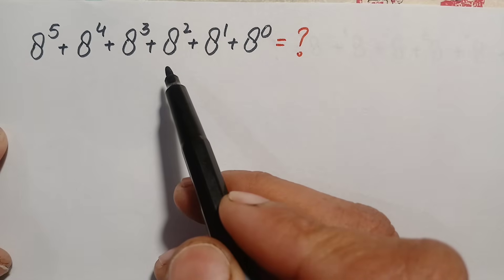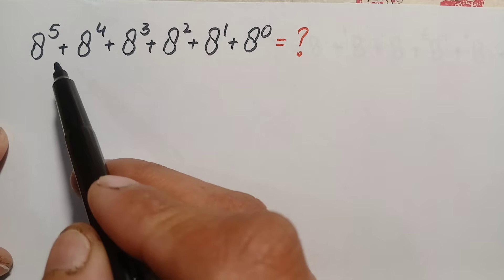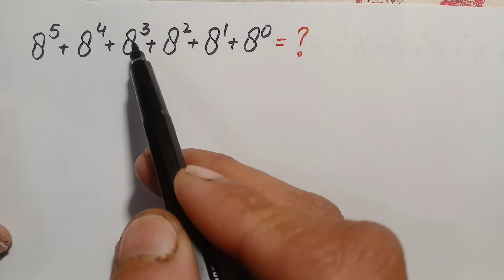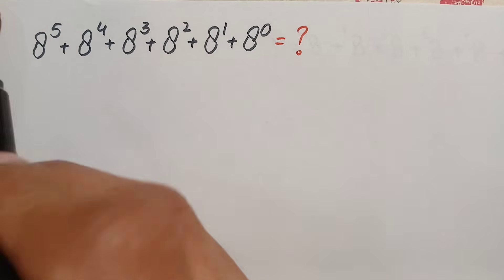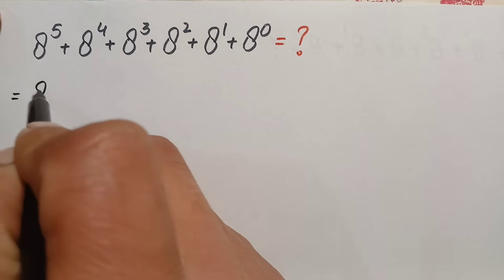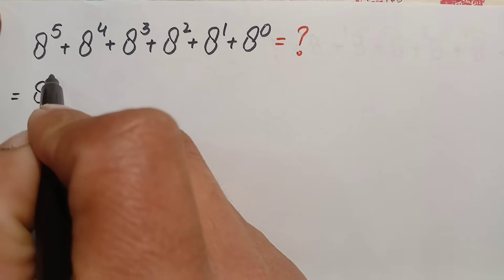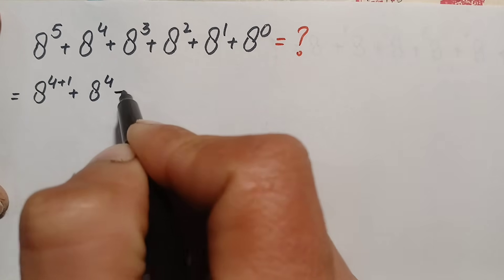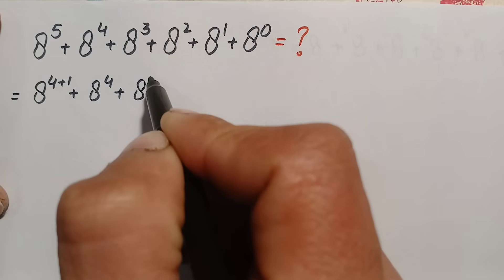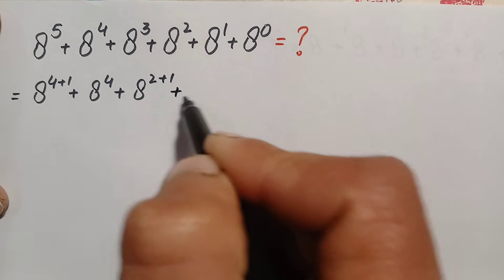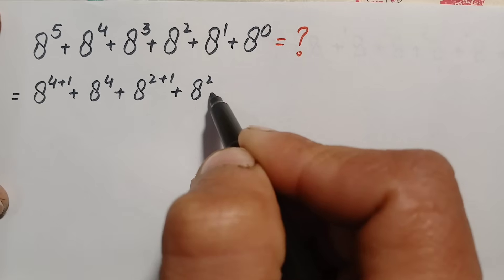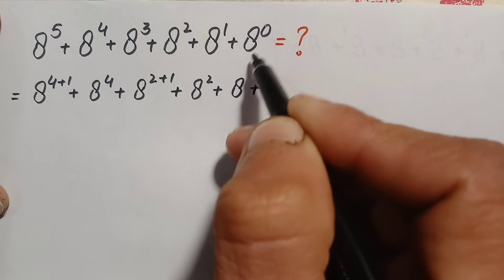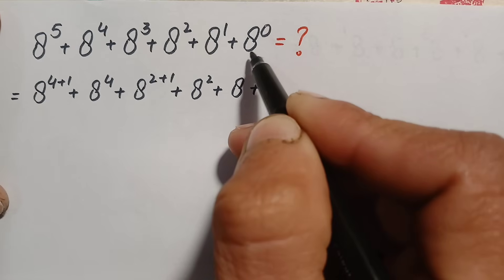So how can we solve this math problem? First of all, we will try to make these two terms the same and these two terms the same. For that, we will do some changes in the powers. So we can write a raised to power 5 as a raised to power 4 plus 1, plus a raised to power 4, plus a raised to power 3, which can be written as 2 plus 1, plus a raised to power 2, plus a raised to power 1, which is simply a, plus a raised to power 0, which is 1, because any non-zero number raised to power 0 is always 1.